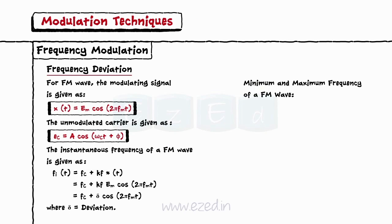Minimum frequency of the modulated wave is given as Fminimum equals fc minus delta. And maximum frequency is given as Fmaximum equals fc plus delta.